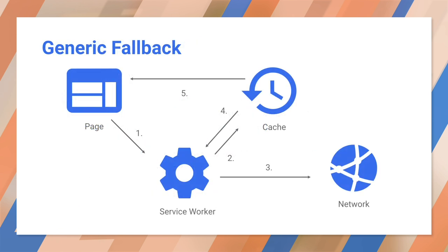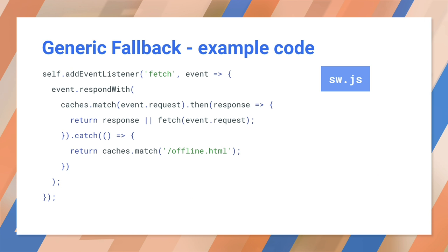If you fail to serve something from the cache and/or the network, you may want to provide a generic fallback. You can use this for default imagery, failed POST requests, or to display fallback content when the user is offline. The item you fall back to is likely to be an install dependency. If your page is posting an email, your service worker might fall back to storing the email in local storage outbox and respond, letting the page know that the send failed but the data was successfully retained. The example shown responds with a fallback page for any request that doesn't get a response from the cache or from the network.